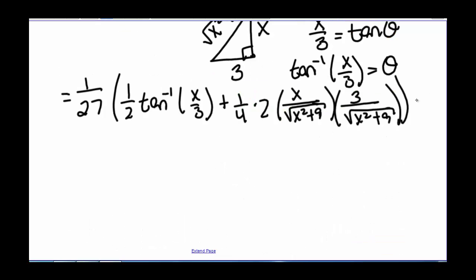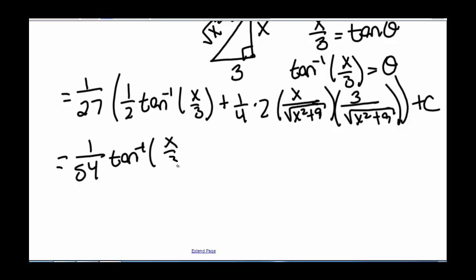Plugging in all our parts and simplifying, we get 1/54 times the inverse tangent of x divided by 3, plus x over 18 times (x² plus 9), plus our constant C.